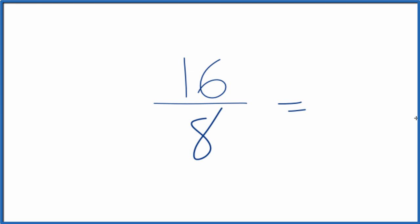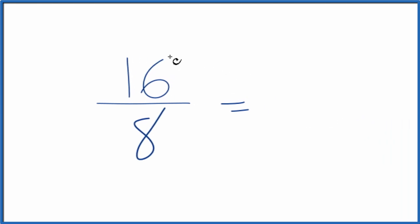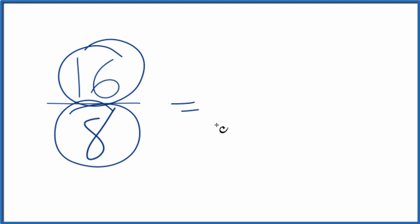To do that we need to find a common factor. That's something that goes into 16 and 8 evenly. So it looks like 8 would go into 16 and 8 would go into itself.